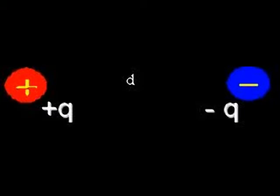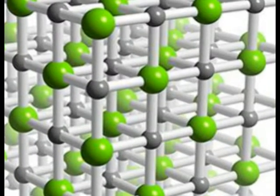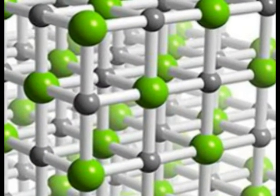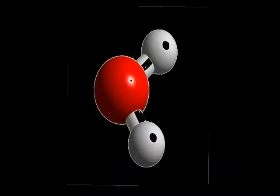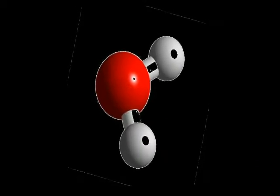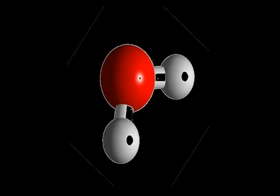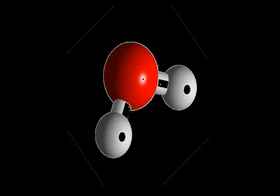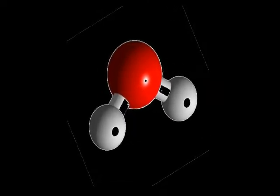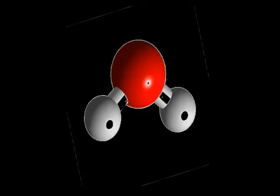An example of a permanent electric dipole is a sodium chloride molecule which consists of sodium and chlorine ions, or a water molecule in which the two hydrogen atoms form an angle of 105 degrees with the oxygen atom at the vertex. The oxygen side is negative while the hydrogen side is positive.